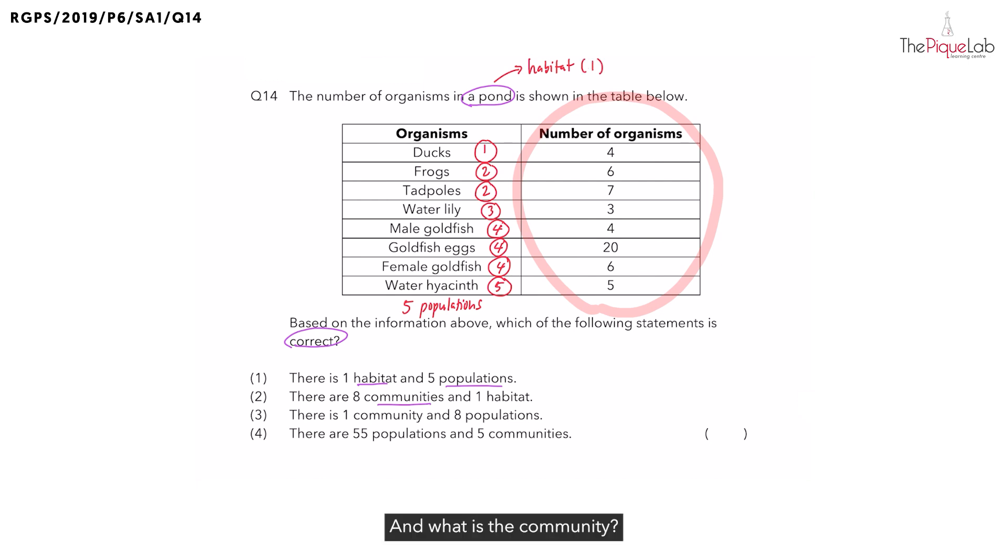And what is a community? A community is formed when different populations live together and interact in the same habitat. And since these five populations of organisms all live together in the same habitat, which is the pond, how many communities do we have forming here? We have one community.